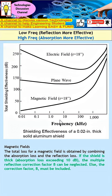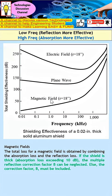Because magnetic field shielding is rather poor, we need to consider the multiple reflection term. This number can be quite significant, especially at lower frequency. So we may face some challenge if we want to shield against magnetic field.